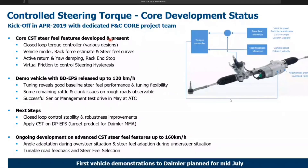We use a closed-loop torque controller, where we apply and test various designs. We have implemented the vehicle model, rack force estimation, and steer feel curves, as well as functionalities to tune active return. The damping functionality includes rack end stop, and lately we also added a virtual friction to control the steering hysteresis.